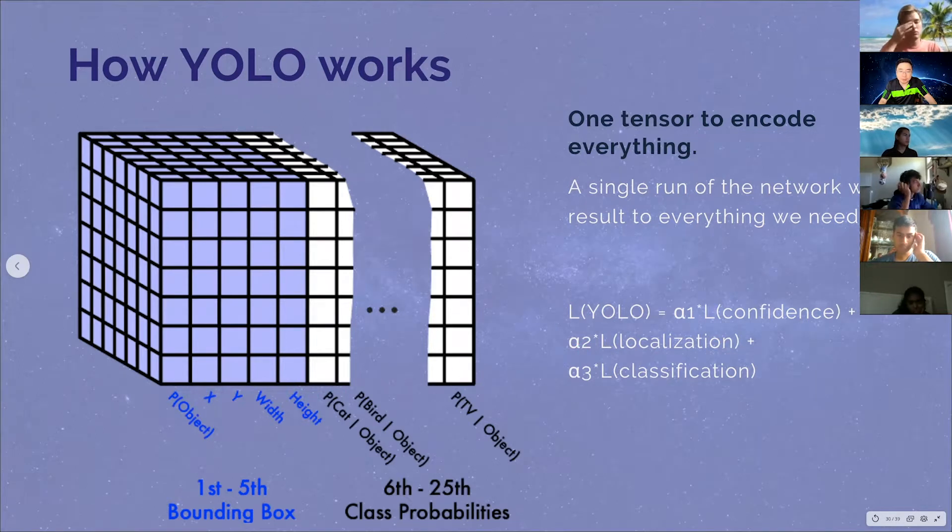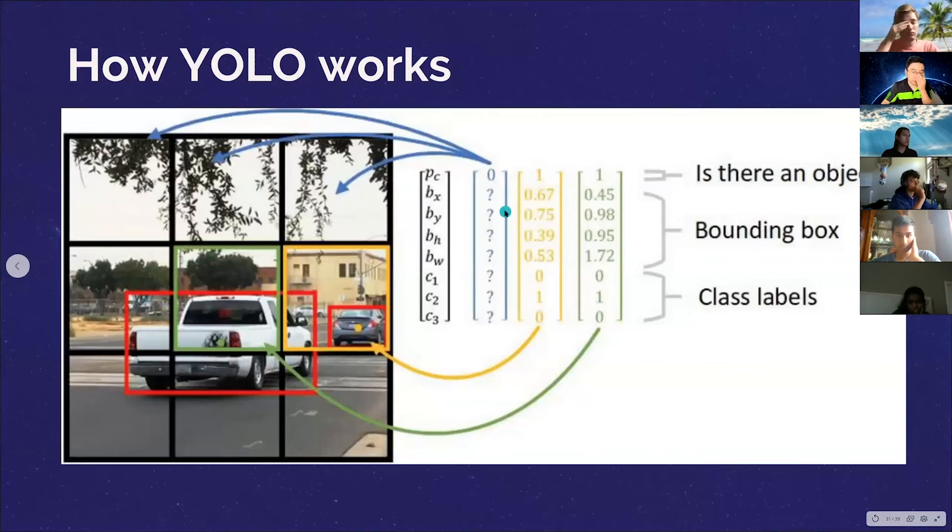So to illustrate a little bit more in terms of what is the output look like, so piece C is basically the probability whether I have this object or not. So for example, right, for these boxes, for these grids, these are zero because there are no object in here. Let's just say in this case, I'm just going to try to predict three different classes.